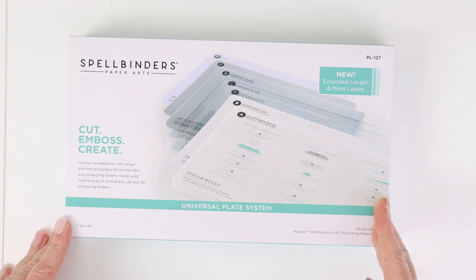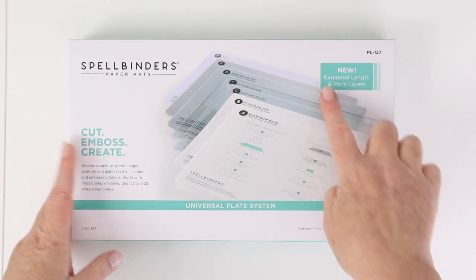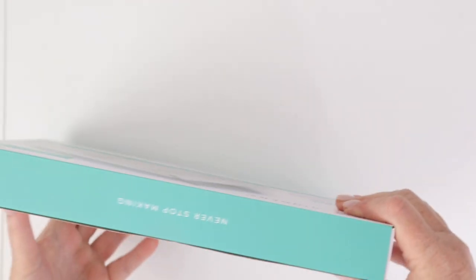You can use other things as well as 2D embossing, 3D embossing, and they come in a new extended length, which means that you can use them with slimline dies and slimline embossing folders.